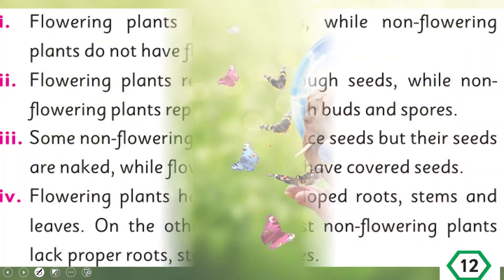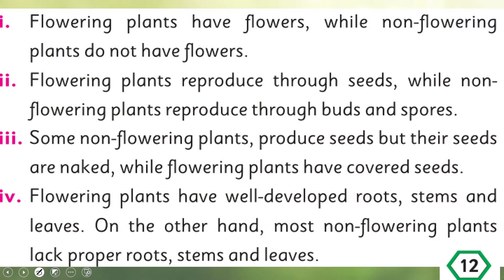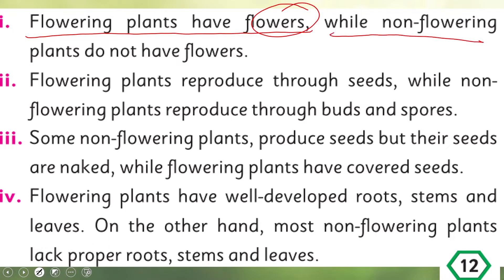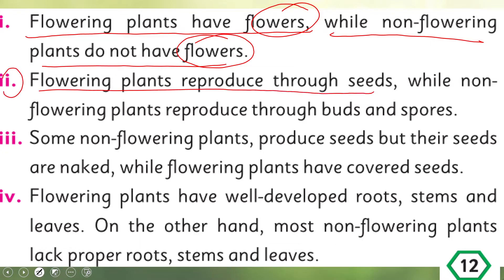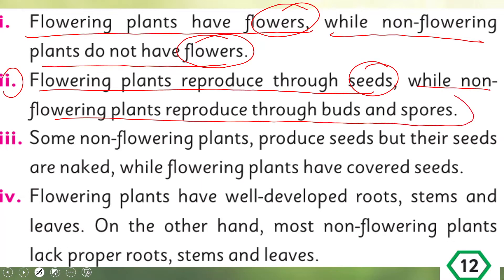Flowering plants have flowers while non-flowering plants do not have flowers — that is the first major difference. Number two: flowering plants reproduce through seeds while non-flowering plants reproduce through buds and spores.